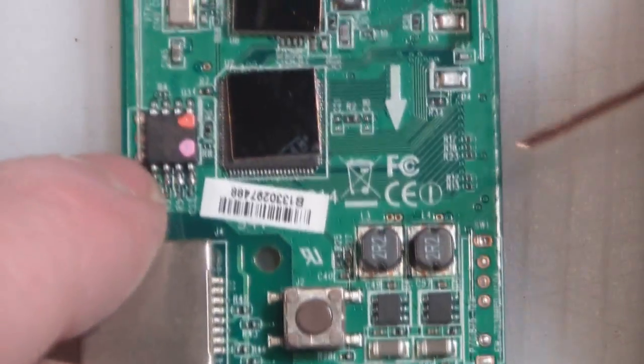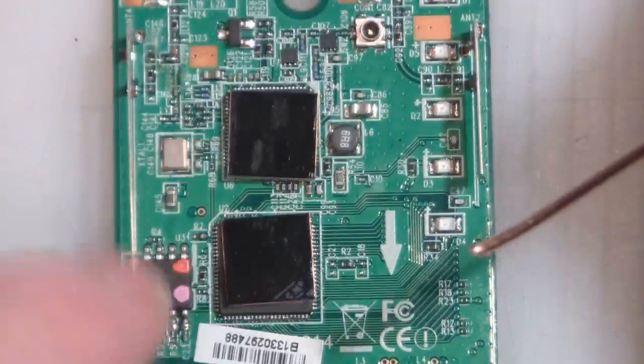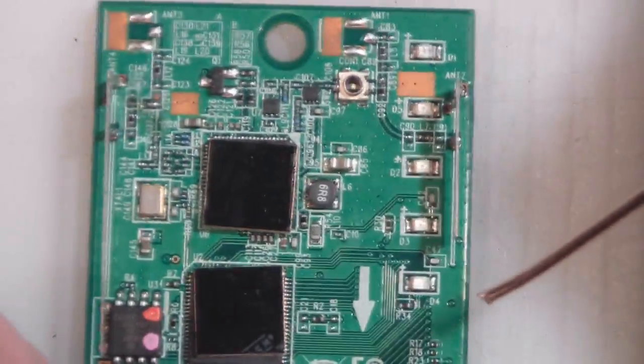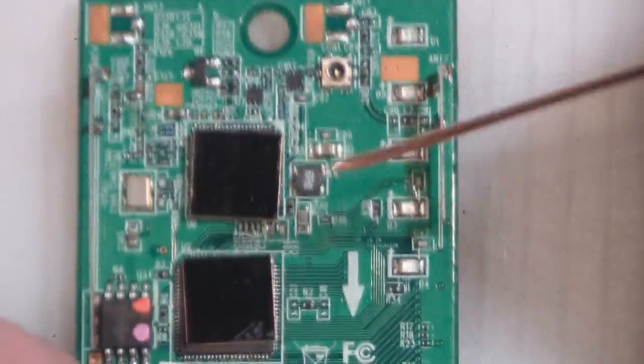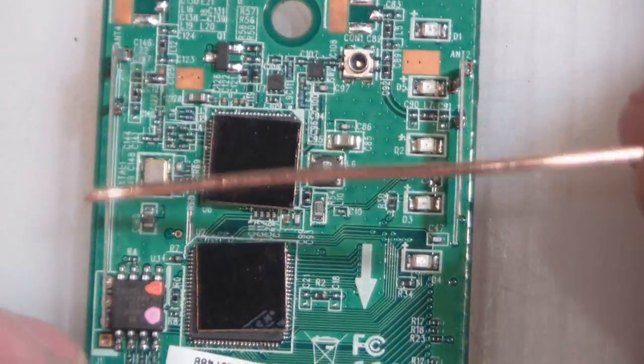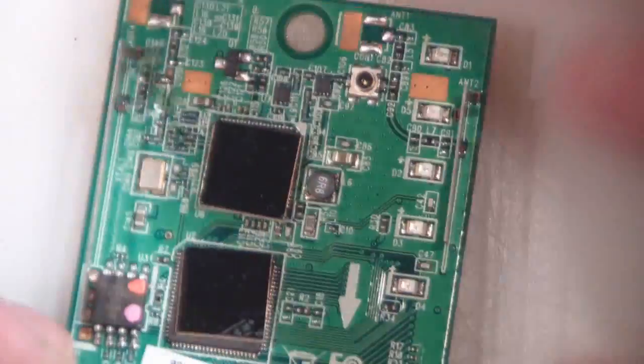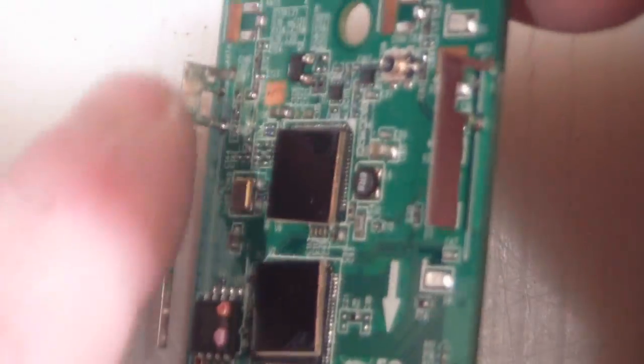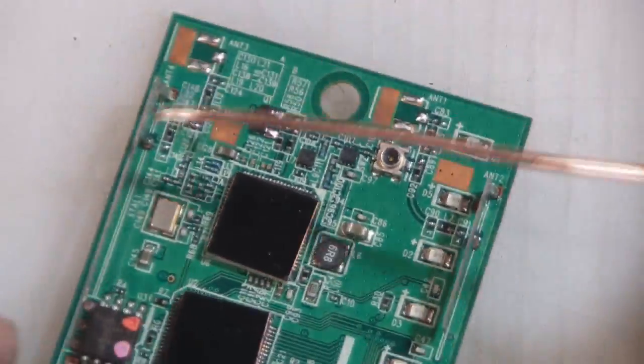Taking a look at the board itself, it's really quite simple to modify this board. You've got your two antennas here. This longer one is the 2.4 GHz and the shorter one is the 5 GHz.